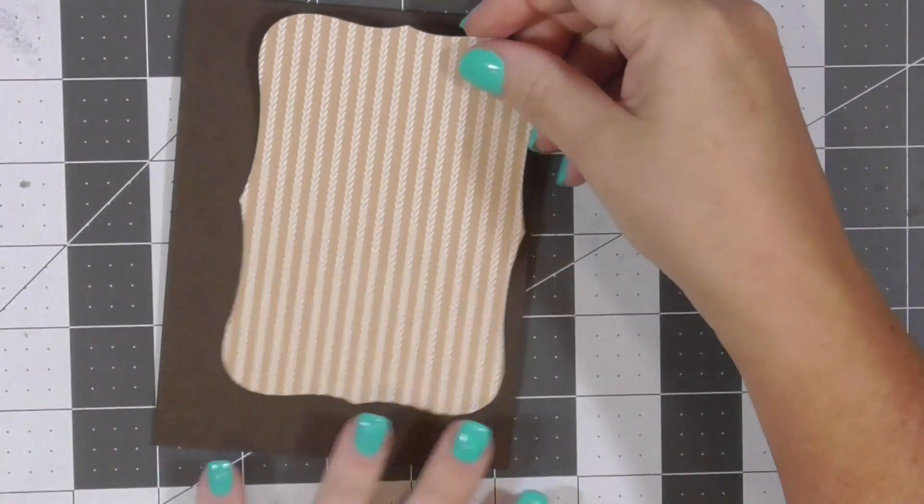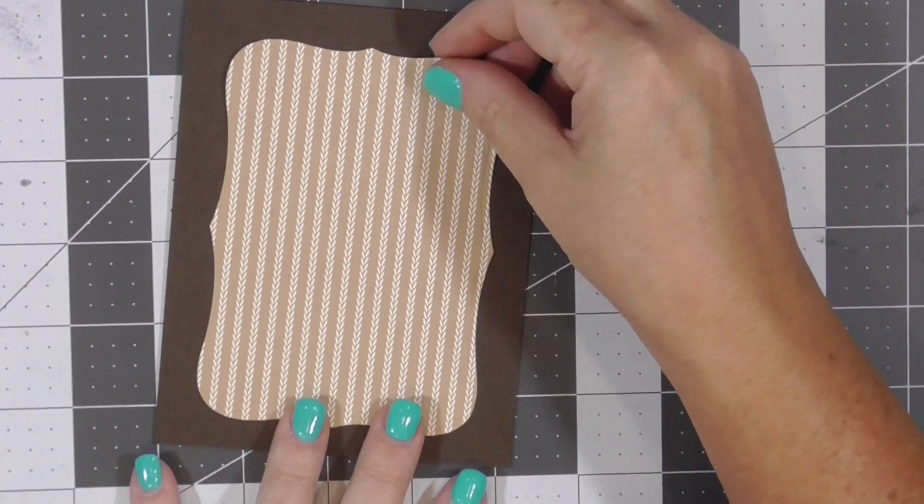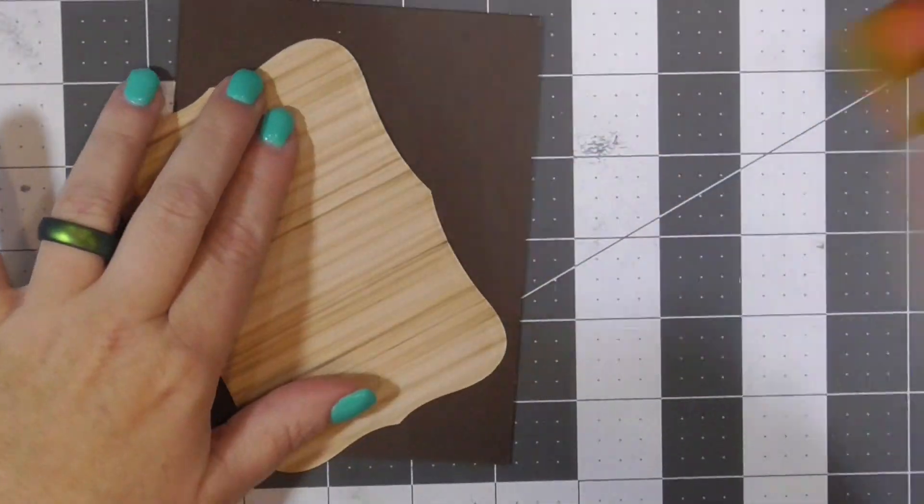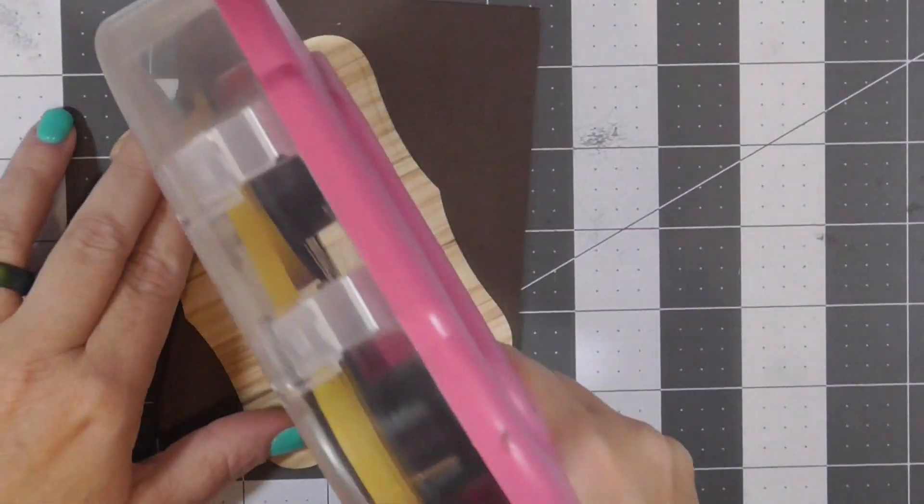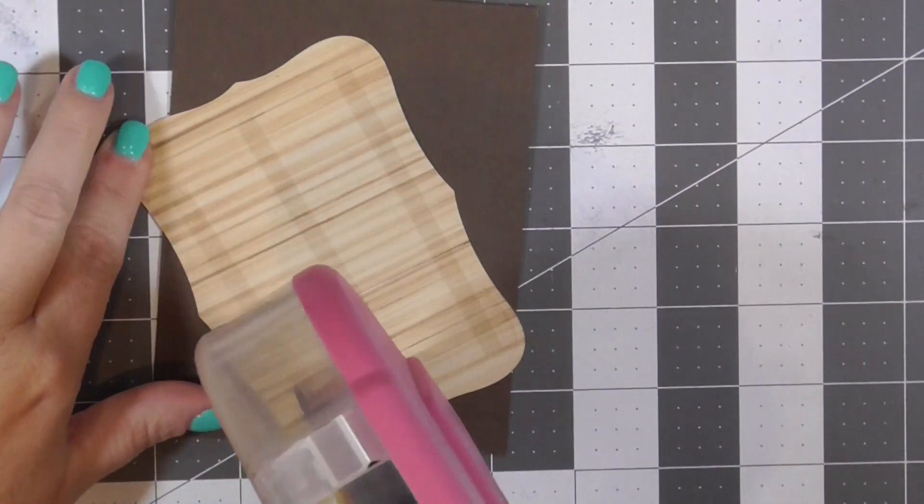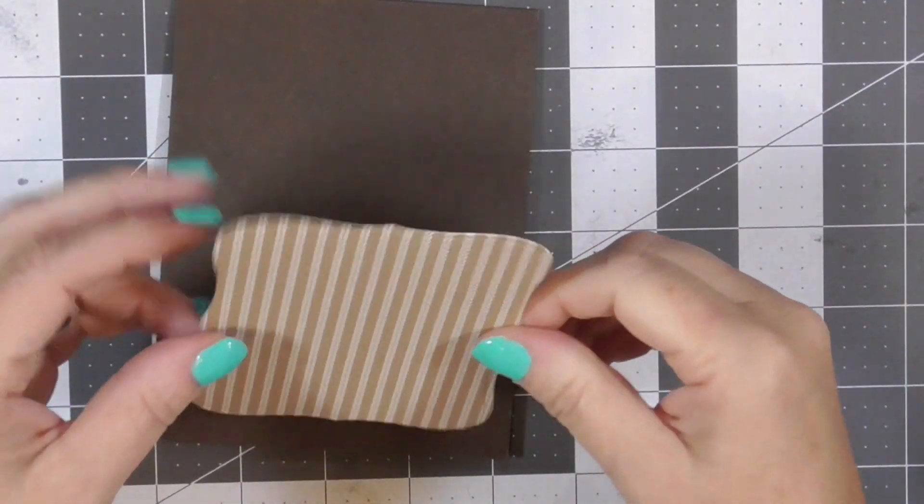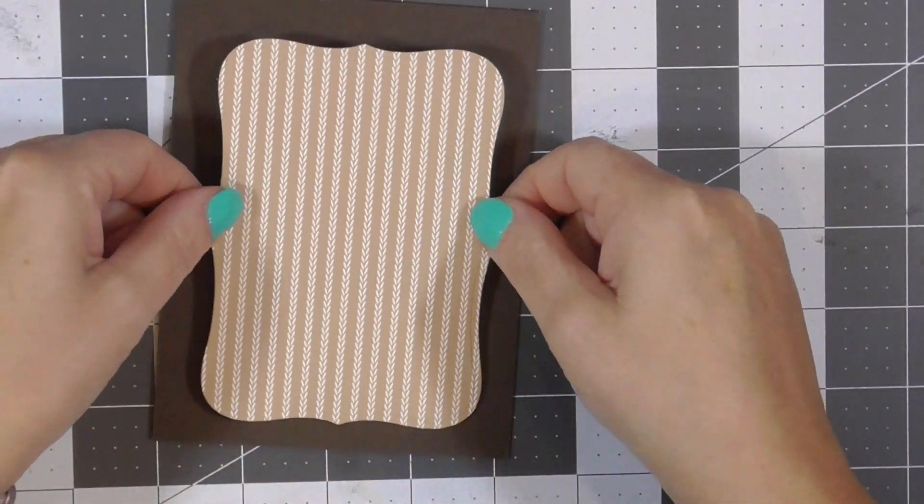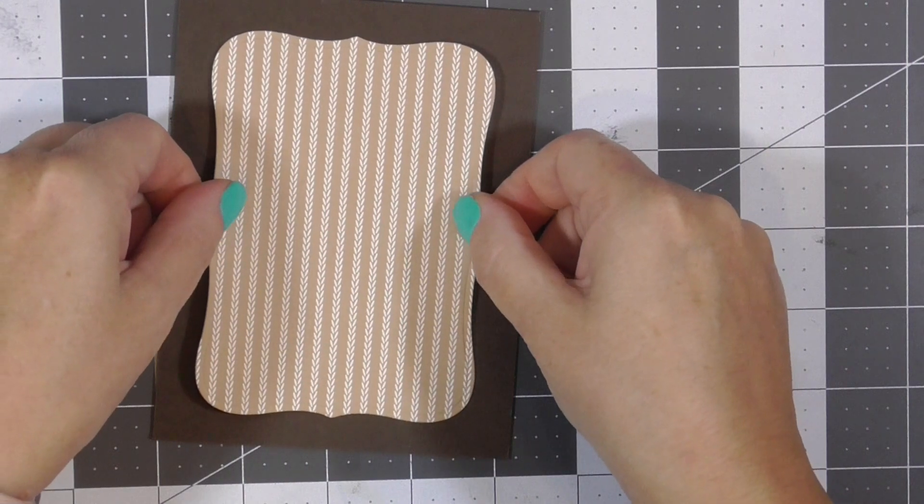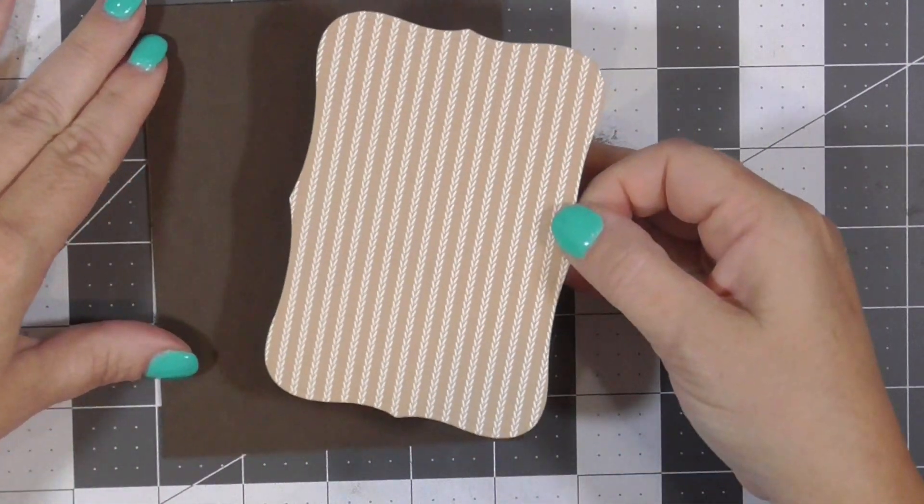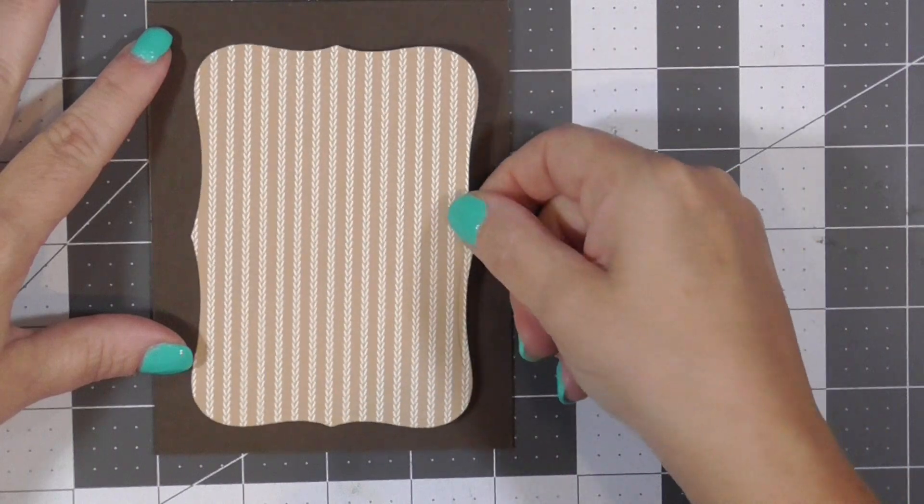This is a thicker, heavier card stock. I have cut out, I think I use the largest of these Spellbinders Nestabilities. It's called Labels Number Eight. A hundred years ago when I was really into and a Stampin' Up demonstrator, we had a similar shape and we called it a top note shape.